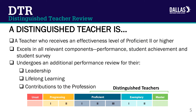So what is a Distinguished Teacher? A Distinguished Teacher: 1. Receives an effectiveness level of proficient 2 or higher. 2. Excels in all relevant components, including teacher performance, student achievement, and student survey. 3. Undergoes an additional performance review for their leadership, lifelong learning, and contributions to the profession.